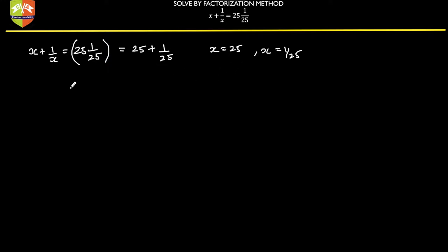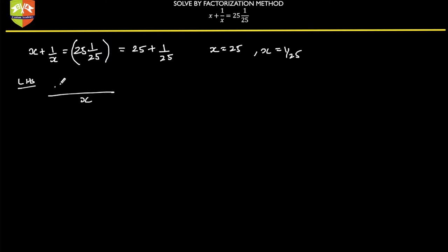But we have to solve it with the complete formal process. So let's see how we can do it. We give LCM to the LHS. In the LHS, you have x in the denominator and x squared plus 1 in the numerator. I hope you know how to simplify using LCM.